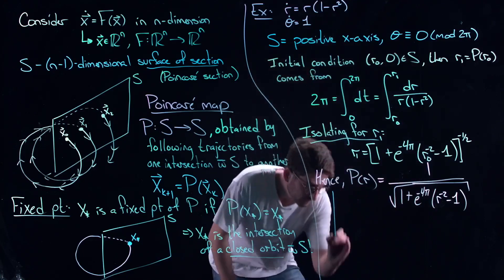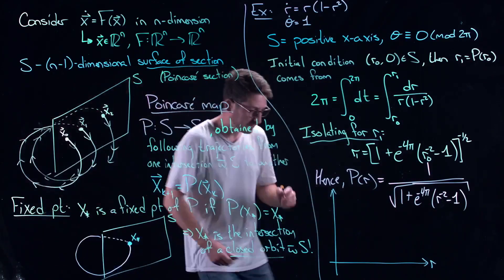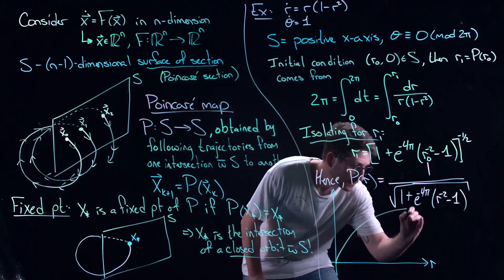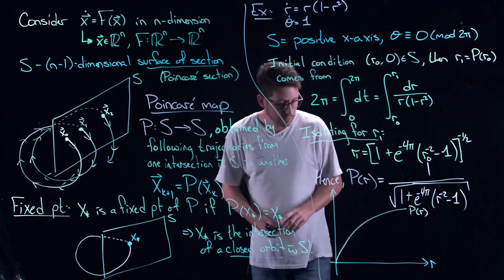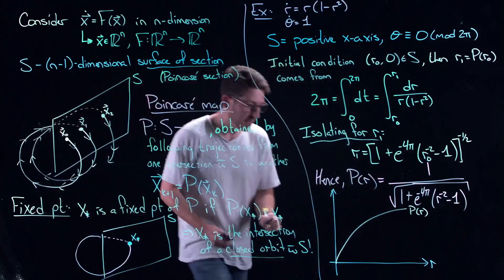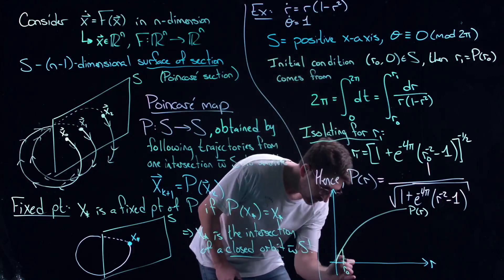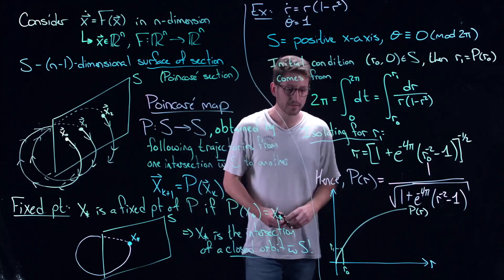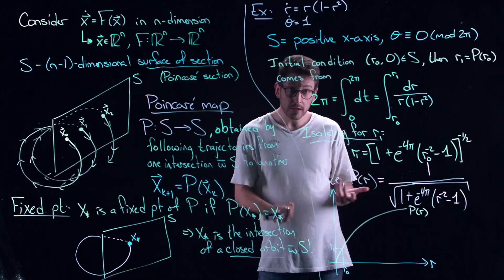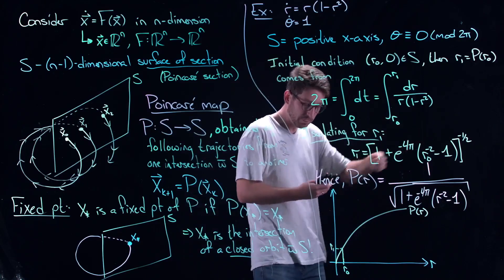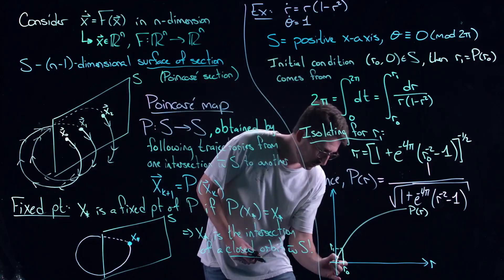We can go further — we can plot the Poincaré mapping. Maybe something like this. If I started somewhere around R0, R1 is right there. What I'd like to do is take R1 onto the x-axis and follow where it goes, because I'd like to know where successive iterations go. The way you can do this is through something called a cobweb diagram, which we'll explore a lot more as we move toward the final lectures.